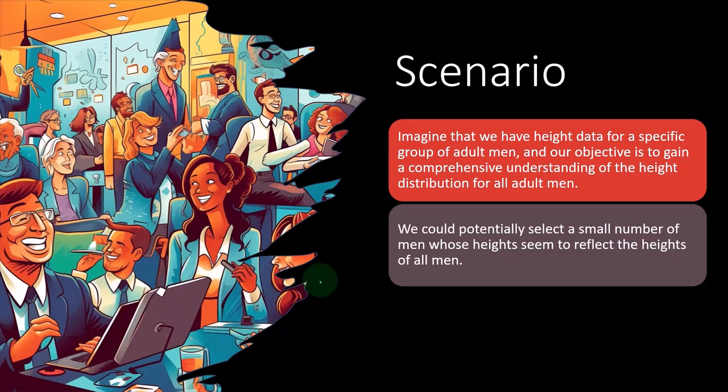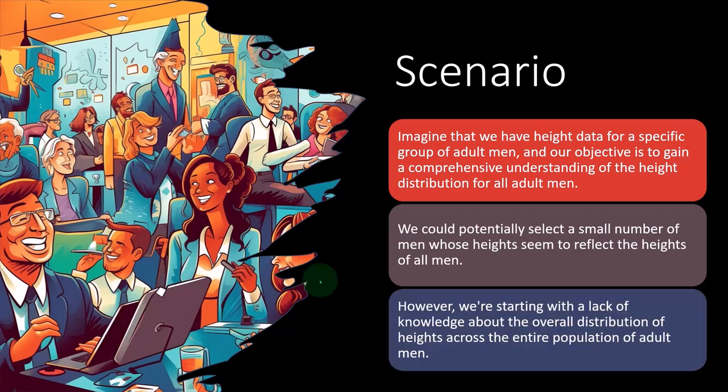However, we're starting with a lack of knowledge about the overall distribution of heights across the entire population of adults. So the problem with that, of course, is you're assuming that you know the answer to the problem that you're trying to solve, right? So if we already knew the answer of the middle height, then of course, picking a sample would be easy. It would also be defeating the point because we would just simply be picking a sample that ties out to the actual height.